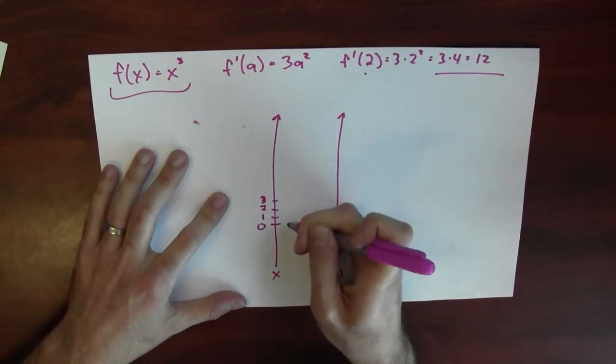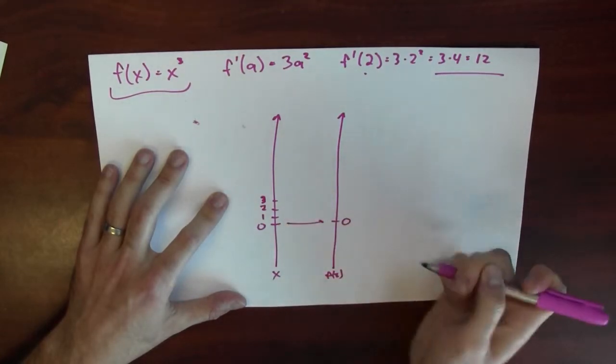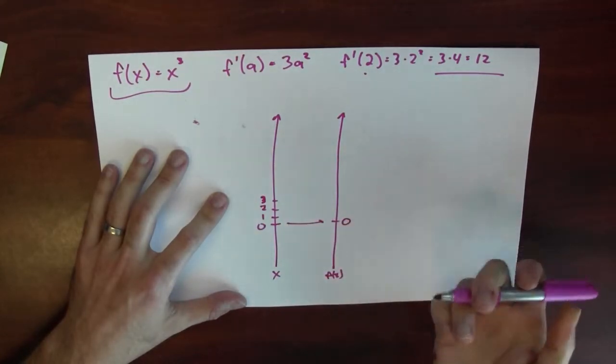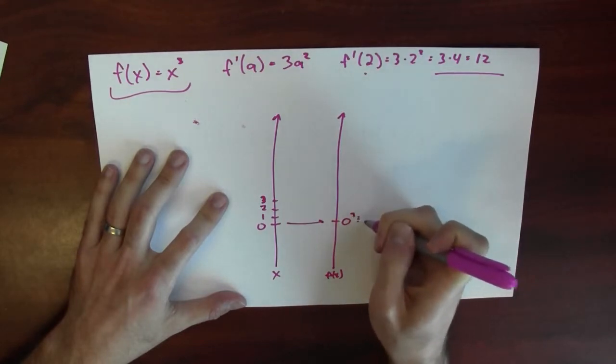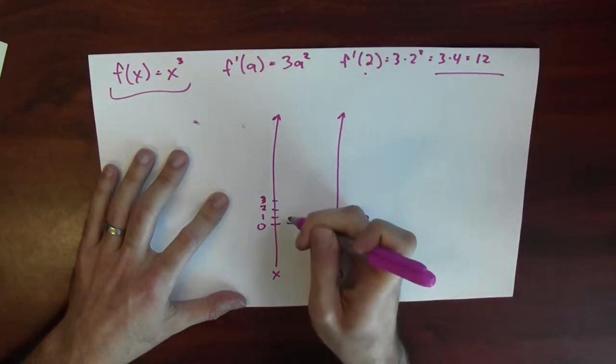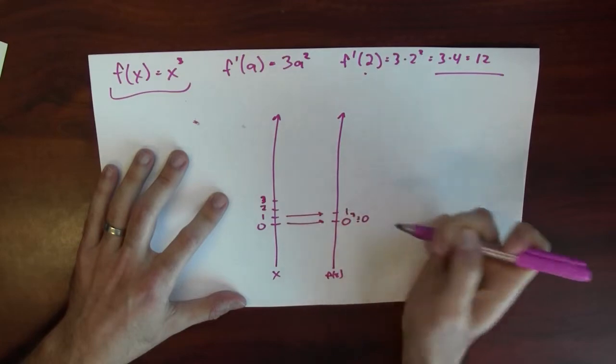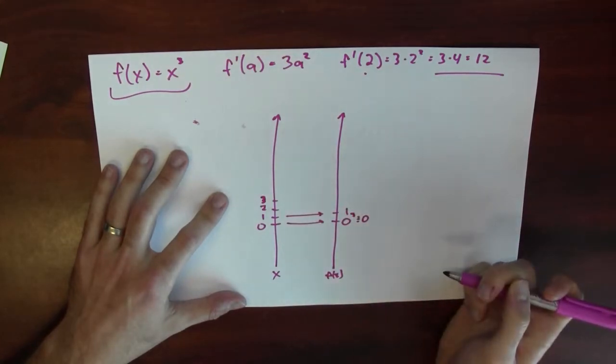And then I could look at what the output of this function is. What's f of x? Well, f of 0 is just 0, because 0 times 0 times 0 is 0. 0 cubed is 0. 1 cubed is also just 1. 1 times 1 times 1 is just 1.